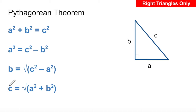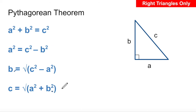So, if you're solving for c, you're going to add the sum of the squares together and take the square root. If you're solving for a or b — one of the two shorter sides — you're going to take the square root of the difference of c squared minus a squared or b squared. These are all variations of the Pythagorean Theorem. If you don't feel comfortable with these derivations, you can always fall back to a squared plus b squared equals c squared, plug in your values, and solve it.